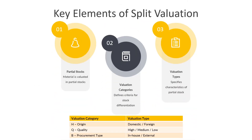Here are certain key elements of split valuation. The first is partial stock management. When a material is subjected to split valuation, it is managed as several partial stocks. A single material is further classified into several partial stocks and each partial stock is evaluated separately based on its specific characteristics. For instance, one partial stock might represent materials procured externally while another represents materials produced in-house. The second key element is the valuation category. In SAP MM, the valuation category determines the criteria for differentiating the partial stocks, with common examples being procurement type, origin or quality.